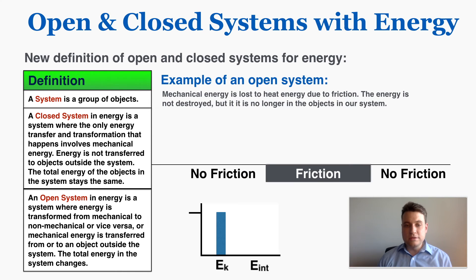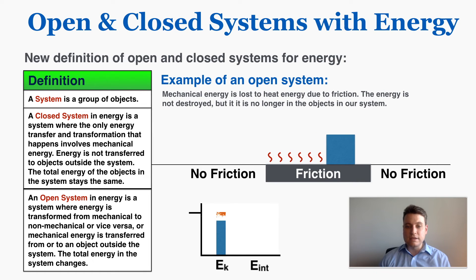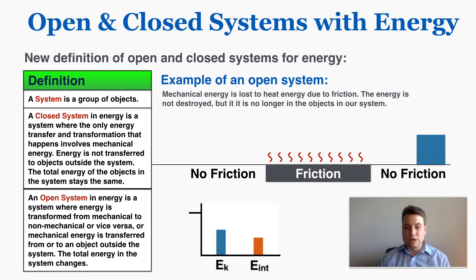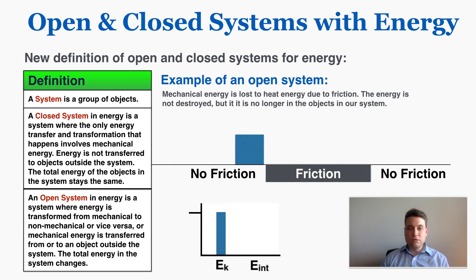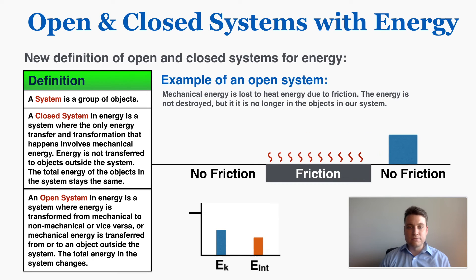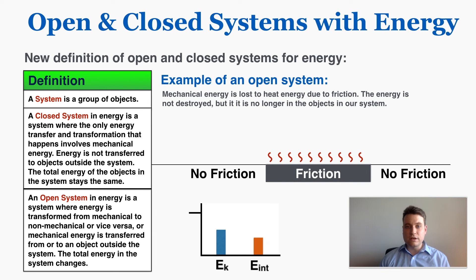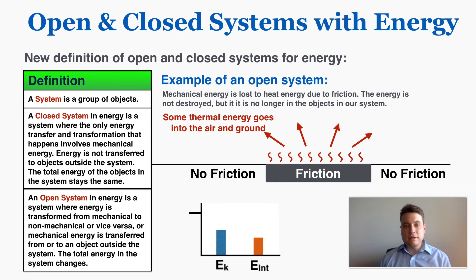An example of an open system is mechanical energy being lost to heat due to friction. As a box slides across the floor, friction transforms its kinetic energy into heat energy. After sliding, some of that energy is no longer in the box — it's in the air and ground as heat and can't be retrieved. It wasn't destroyed, since energy cannot be created or destroyed; it just no longer exists in the box and is lost to the atmosphere.